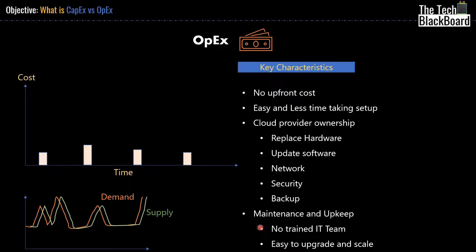You use resources, you pay for them — done and dusted. Whenever you want to upscale or downscale, it just takes a few clicks and can even be automated. Want to test your application on different browsers? Just spin up a virtual machine, test your app, delete the virtual machine, and that's it. You don't need to give a second thought to maintaining the underlying hardware — the cloud provider does it for you. You just pay for the amount of time you used the resource.